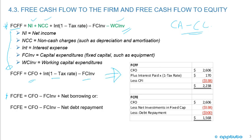In the previous LOS, when we used the direct cash flow example, I put FCFF and FCFE at the bottom of the Excel sheet. Another formula to memorize is free cash flow to equity, which starts with cash flow from operations minus capital expenditures, plus net borrowing — or if you're paying back debt, minus the net debt repayment.